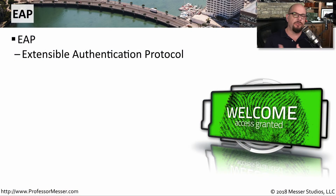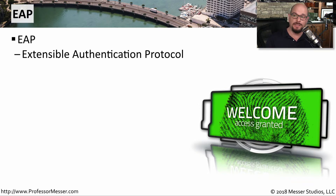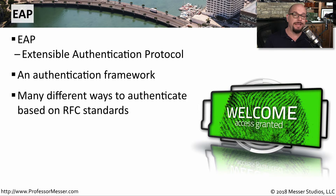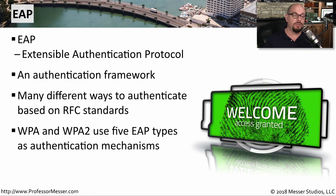In a previous video, we discussed encryption mechanisms that we use on our networks. But we also need to provide some way to authenticate onto the network. To do that, we use a framework called EAP, the Extensible Authentication Protocol. This framework has many different methods that can be used to authenticate to a network, and there are many RFC standards that use EAP. For our wireless networks, both WPA and WPA2 use different forms of EAP to provide authentication.